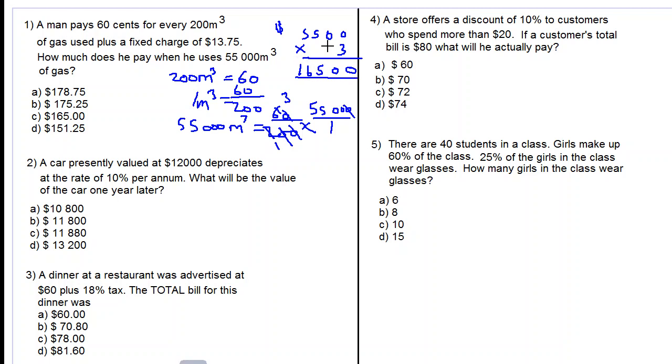So he would pay 16,500 cents, which is really $165, and we divide by 100. So he also has to pay a fixed charge of $13.75. So we now add 165 to 13.75 and we will get 178.75. The answer is A.